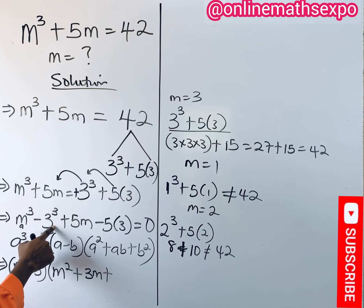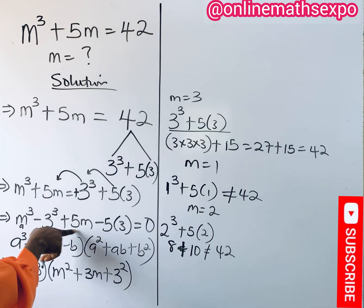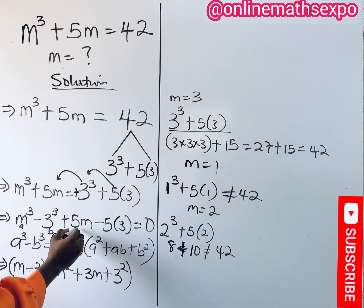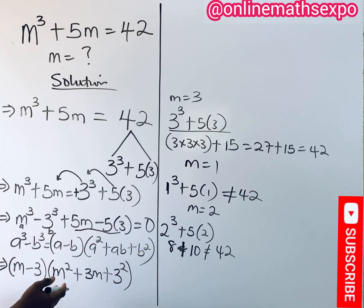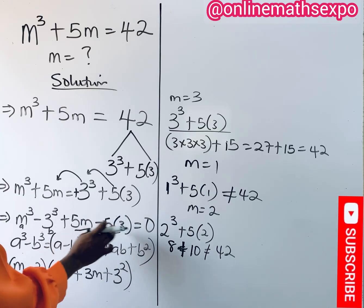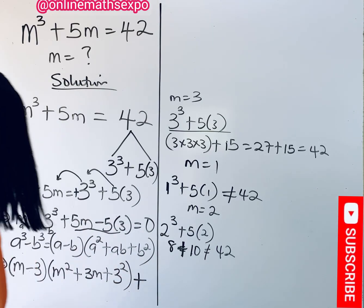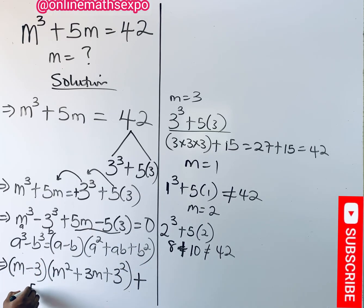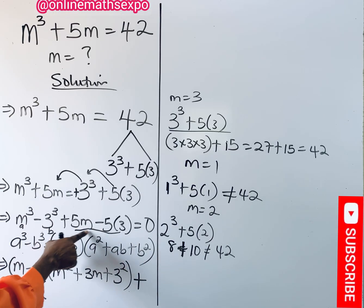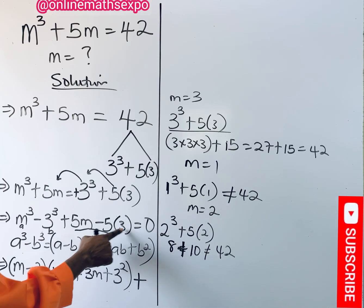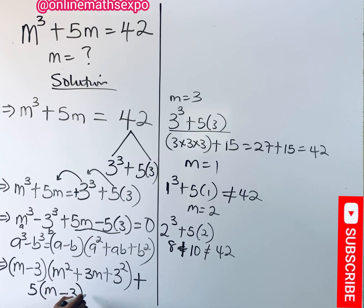For the remaining part, observe that 5 is common in both 5m and 5 times 3. So we factor 5 out, giving us plus 5 times (m minus 3). The full expression is now (m minus 3)(m² plus 3m plus 9) plus 5(m minus 3) equals 0.